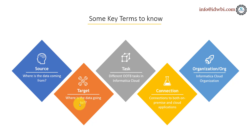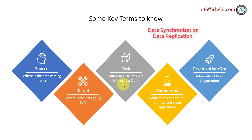Target is where you are publishing or sending the data to. It can also be a database, flat file, or a cloud-based connectivity, in whatever structure that expects. Tasks are the different out-of-the-box tasks within Informatica Cloud.